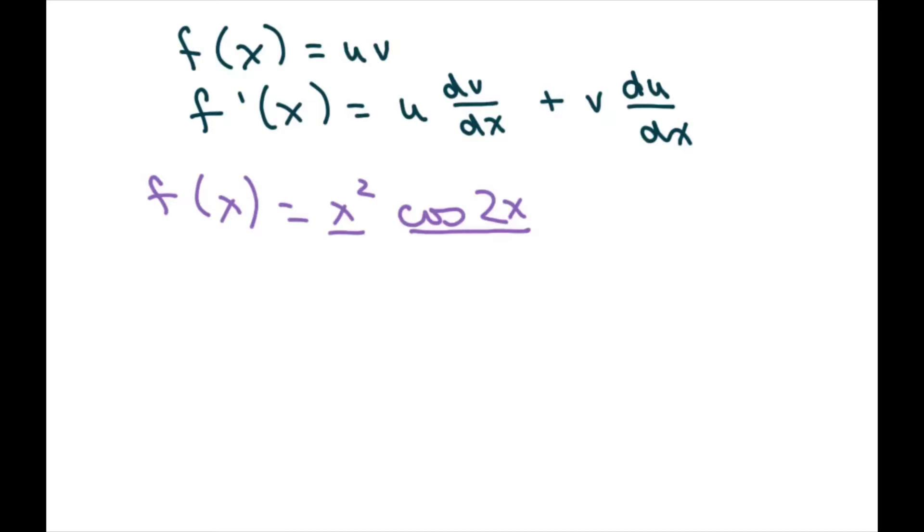So we just plug it in. Our u is going to be x squared, so just copy him down and then take the derivative of cosine of 2x. And so that's going to be negative 2, and the derivative of cosine is negative sine. And then you just write this guy down, 2x.